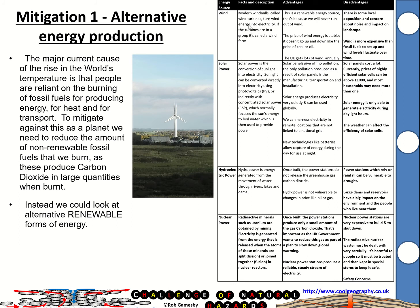Modern windmills called turbines turn wind energy into electricity. If turbines are in a group, it's called a wind farm. These have great features: it's renewable energy because we will never run out of wind, the price of wind energy is stable and doesn't fluctuate like coal or oil, and the UK gets a lot of wind annually. There are some disadvantages though — local opposition over noise and landscape impact, wind is more expensive than fossil fuels to set up, and wind levels can fluctuate over time.